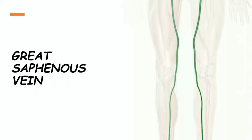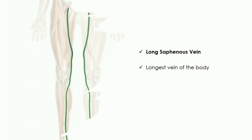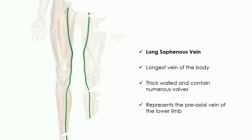Today we are going to see about the anatomy of the great subvenous vein. The great subvenous vein is one of the superficial veins of the lower limb, lying in the superficial fascia. This is also called the long subvenous vein, and as the name says, this is the longest vein of the body. It extends from the dorsum of the foot up to the upper part of the thigh. It has a large number of valves ensuring uni-directional flow of blood from the lower part of the body up to the heart, and represents the pre-axial vein of the lower limb.